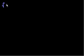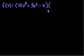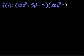Let me think of a good problem. Let me do another one like this, and then I'll introduce ones that use the product rule and the chain rule together. So let's say that f of x is equal to 10x to the third plus 5x squared minus 7, times 20x to the eighth minus 7.